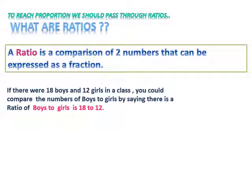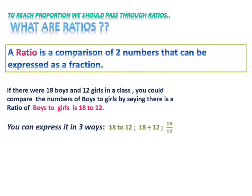For example, if there were 18 boys and 12 girls in a class, you could compare the numbers of boys to girls by saying there is a ratio of boys to girls is 18 to 12. You can express it in three ways: either 18 to 12, or 18 divided by 12, or 18 over 12.